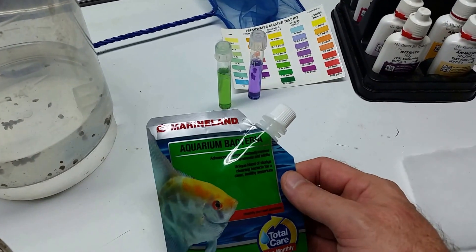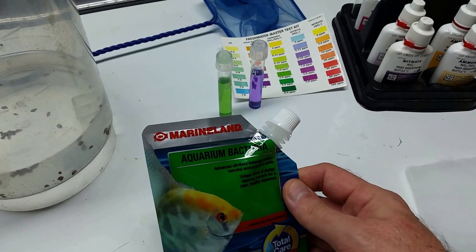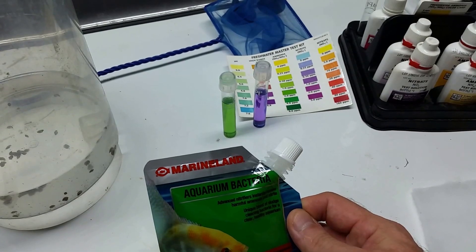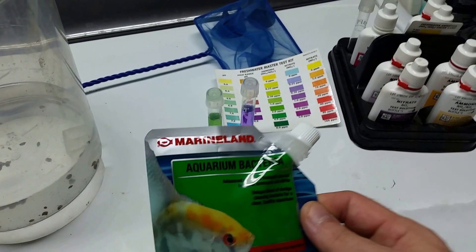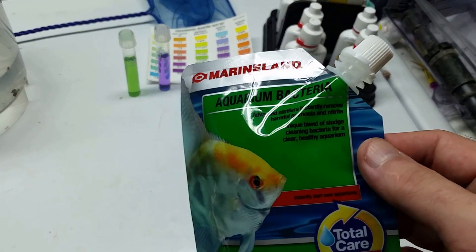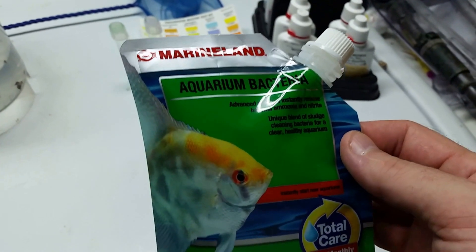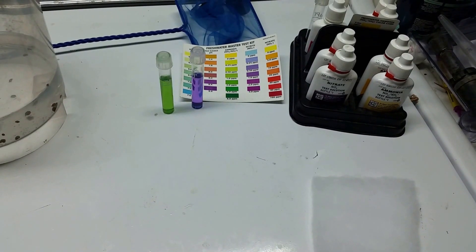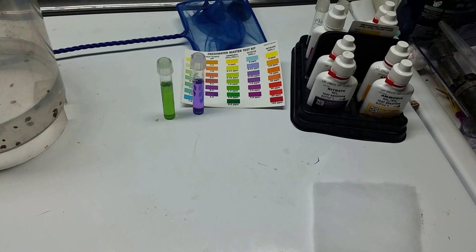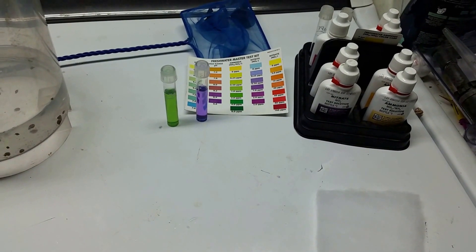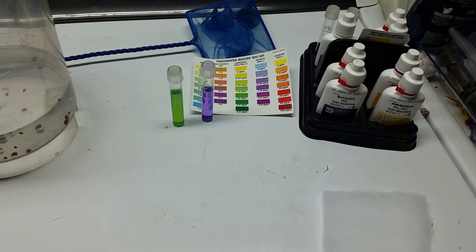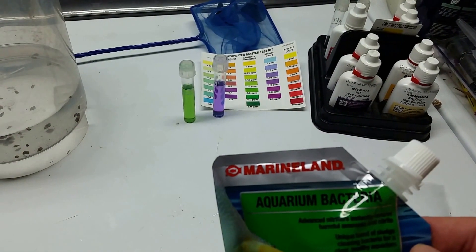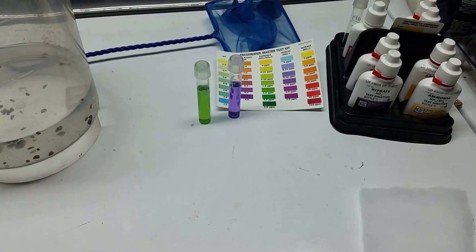So this is my first experience using this stuff. I was recommended this and not the, what is it, Tetra Safe Start. The reason being the Safe Start also has the water conditioners and the ammo block and all that so that you can actually get it started before your cycle's finished, and I simply wasn't going to worry about doing all that and paying the extra money. So I went with the bacteria alone. I was also told that the Safe Start doesn't actually work very well as far as getting your cycle started and that this Marineland was much much better.